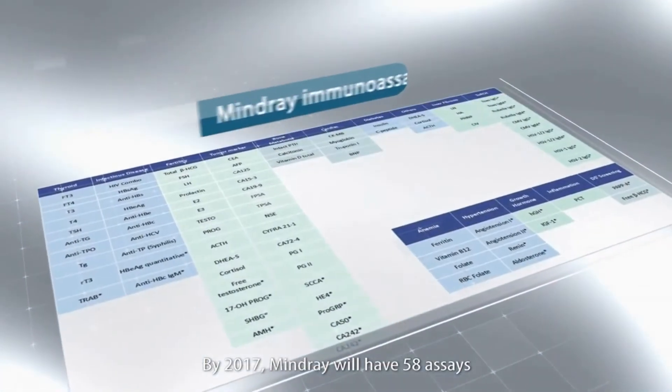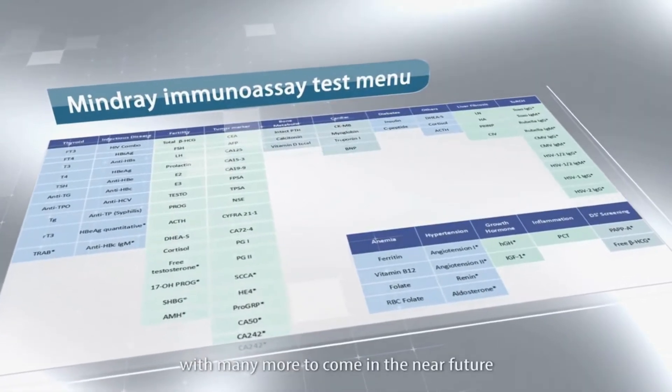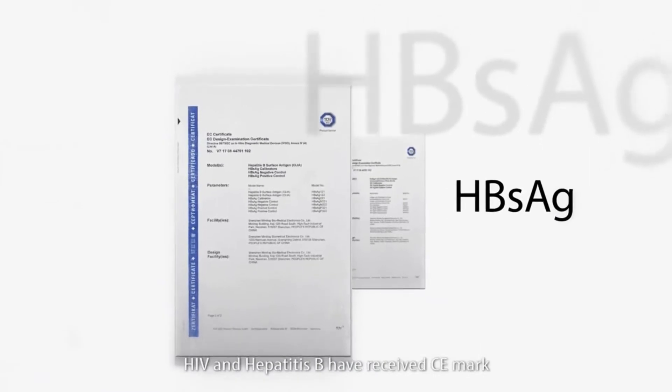By 2017, MindRay will have 58 assays, with many more to come in the near future. The assays for two infectious diseases, HIV and Hepatitis B, have received CE mark after conducting 20,000 tests by the German Red Cross.